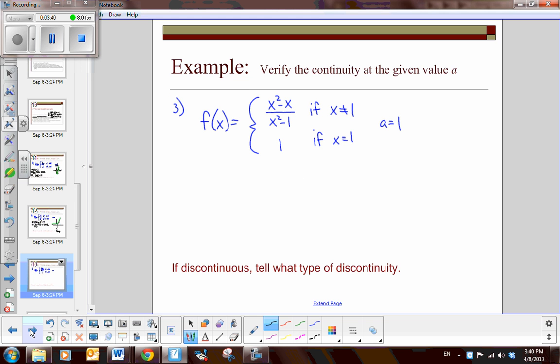What about this? I've got a piecewise that's a little more complicated, and we're looking at when the value of X is 1. First condition: does the value exist at 1? Yes, if X equals 1, then the output is 1. So that's good.